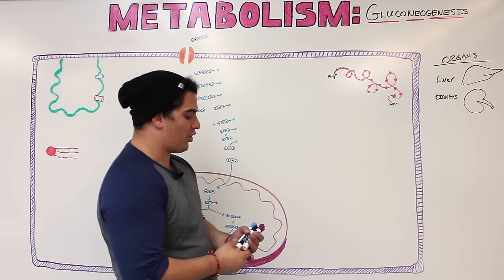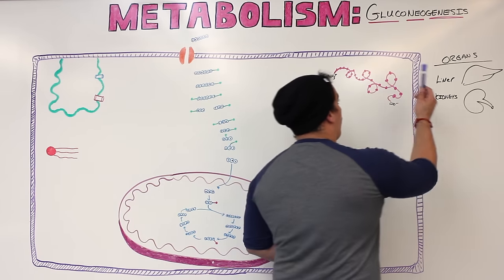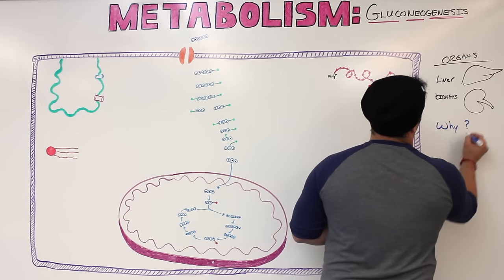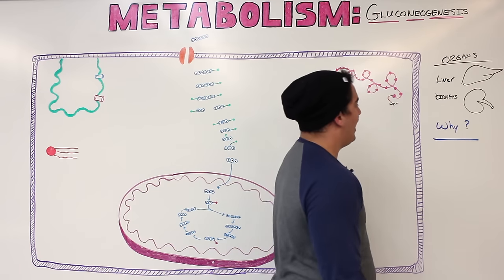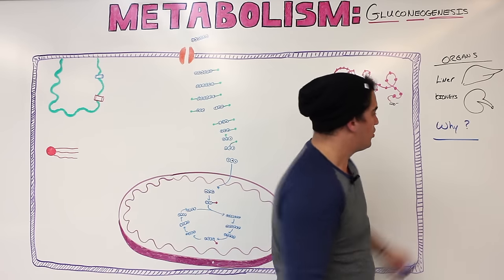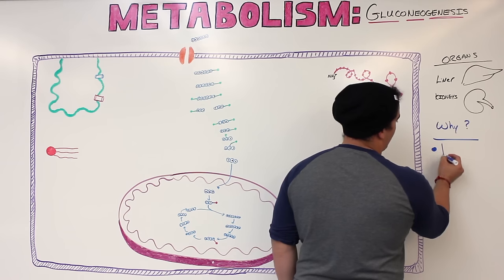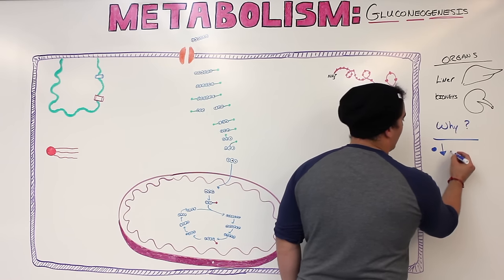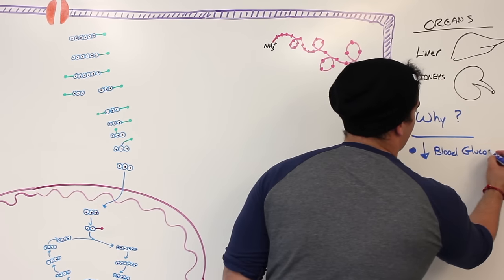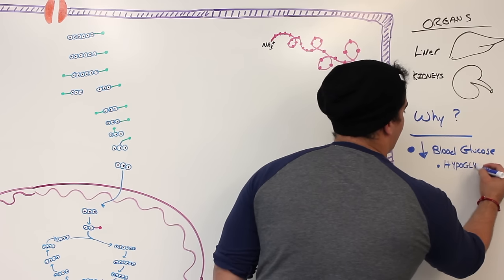Now, why is gluconeogenesis occurring? It's occurring because your blood glucose levels are low — that is one of the primary reasons. Low blood glucose levels, which we refer to as hypoglycemia, is the main driver of this process.